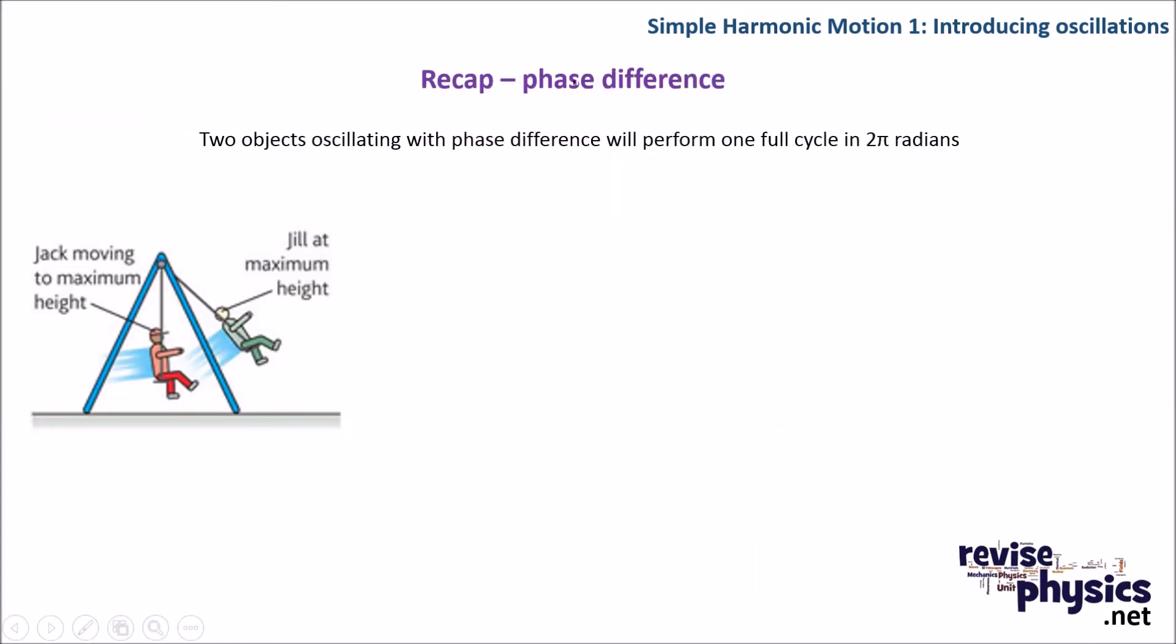The last thing that we need to look at in this introduction is just to recap phase difference. Now, any object that's oscillating will perform one full cycle in 2π radians. Hopefully you've looked at circular motion where we discussed what we meant by a radian and where this one full cycle in 2π comes from. But Jill, for example, here is at maximum height in 2π radians. She'll go all the way back to her maximum height on this side and then swing back to where she began.